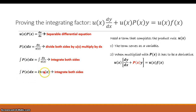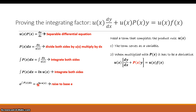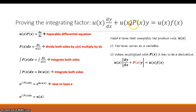The integral of p(x) dx equals the natural log of u(x). To eliminate the natural log, we raise both sides as an exponent of e, which cancels the natural log and gives us: u(x) must equal e raised to the integral of p(x) dx. That is our integrating factor. You can verify by the chain rule that u(x) times p(x) does indeed equal u prime(x), confirming it works.